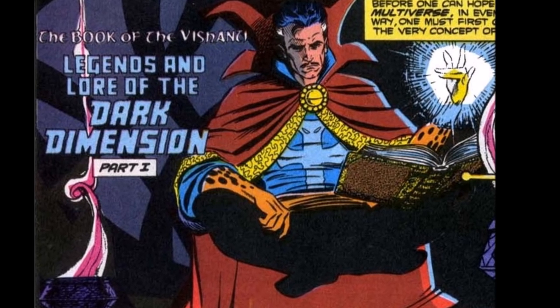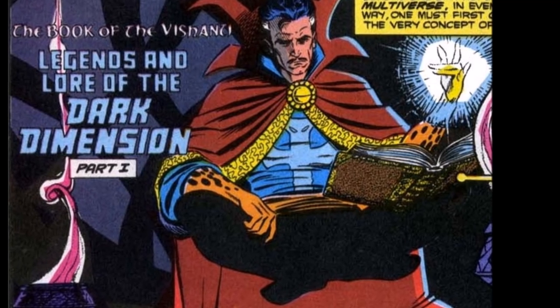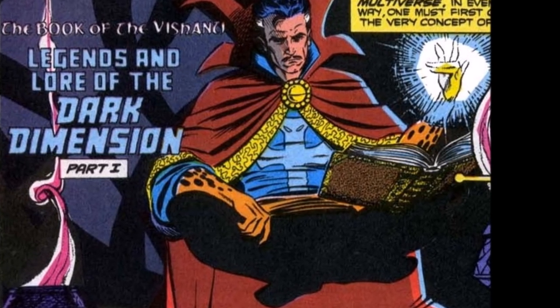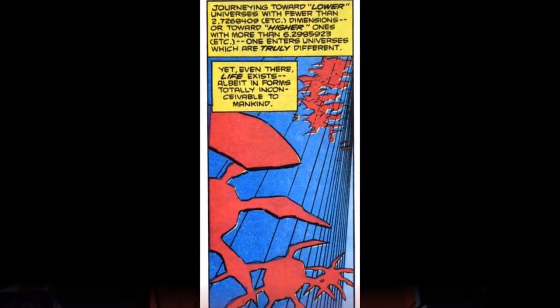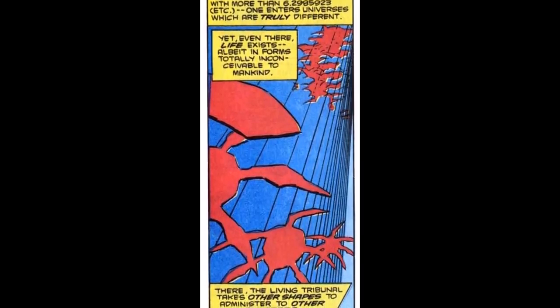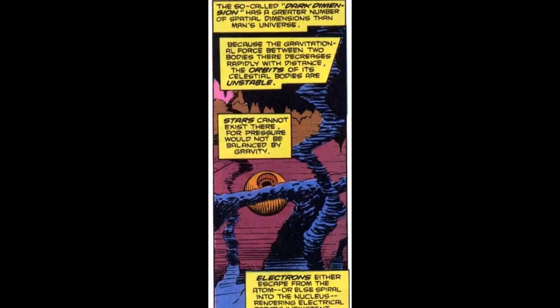The easiest place to start is to continue with the Book of Ashanti from Dr. Strange: Sorcerer Supreme issues 21 through 22, where we're given an in-depth explanation of both the Dark Dimension and the Faultine. We learned in the previous episode that dimensions within the Marvel universe can have more or less than three spatial dimensions, and even portions of a spatial dimension. These universes are extremely different from our own, but life can still be found there.